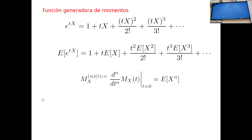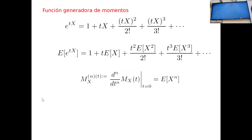Si calculo la primera derivada con respecto a T y la evalúo en cero, me queda E[X]. Cuando calculo la segunda derivada, me queda E[X^2], porque los términos con T se anulan al evaluar en cero. La n-ésima derivada te va escupiendo los momentos. Entonces, toda la información sobre los momentos está codificada en esta función; si la calculo, solo tengo que derivar para obtener el momento que me interesa.